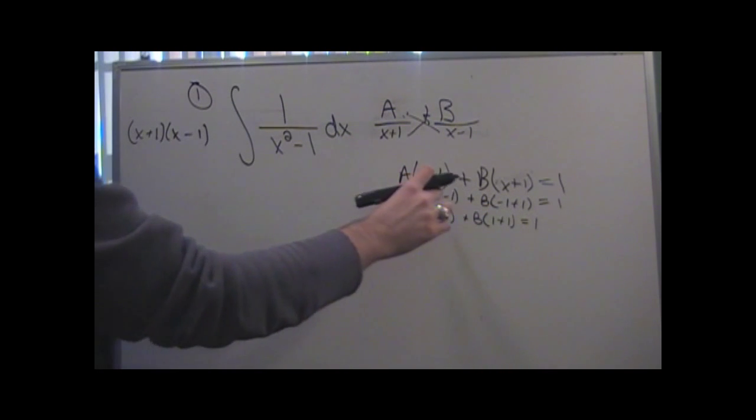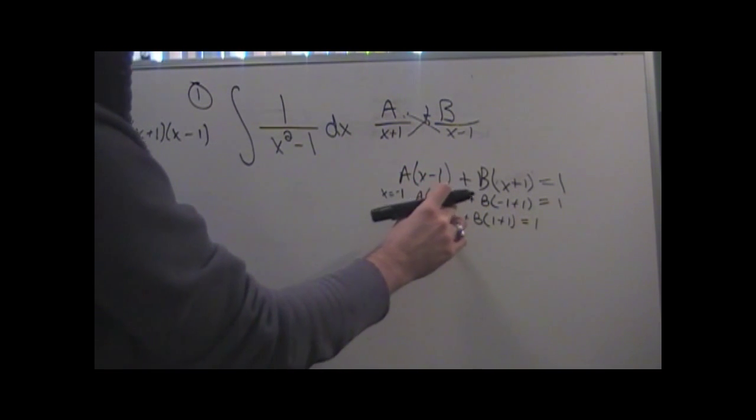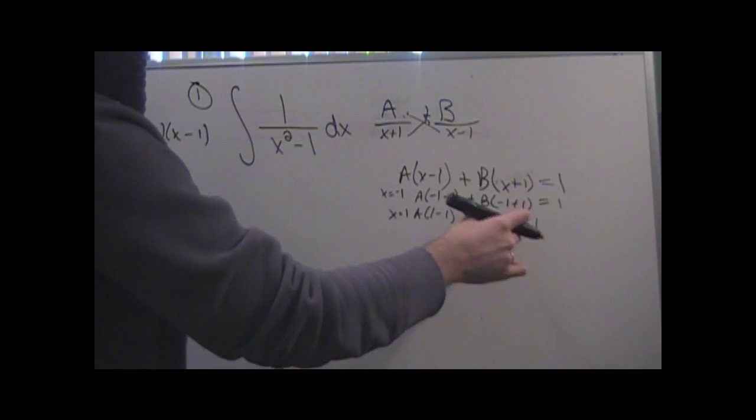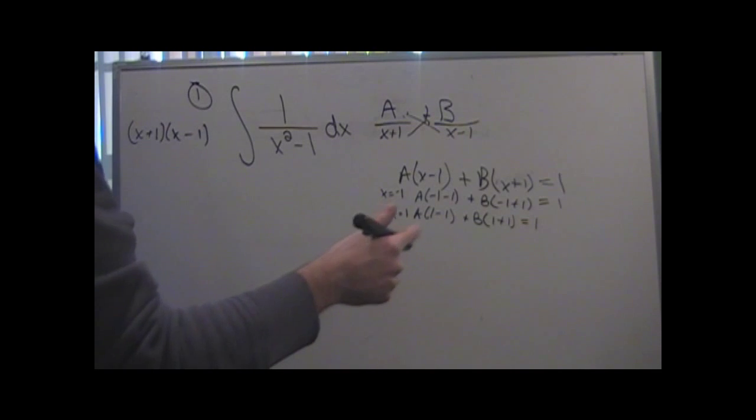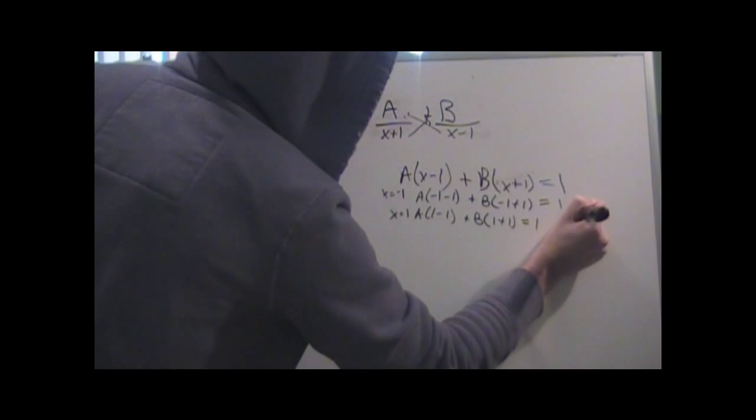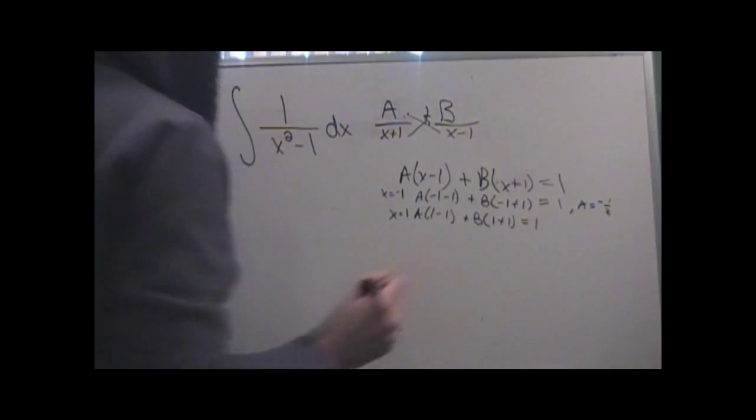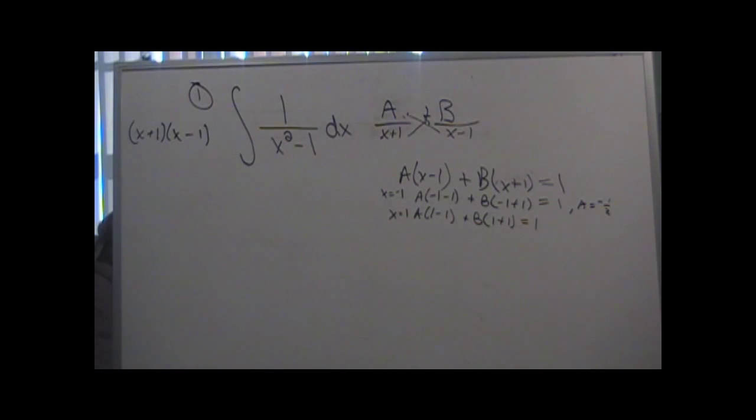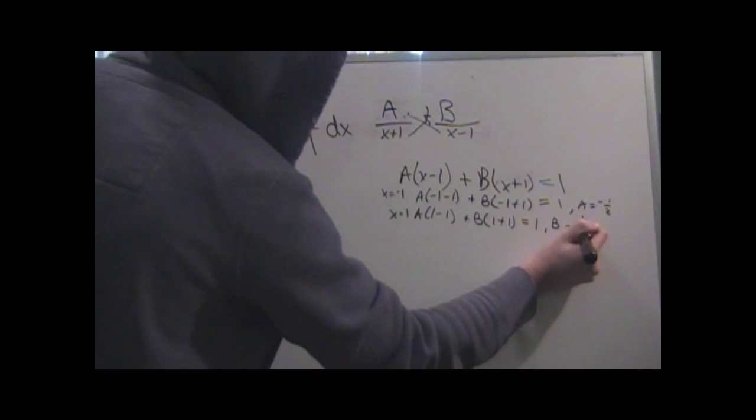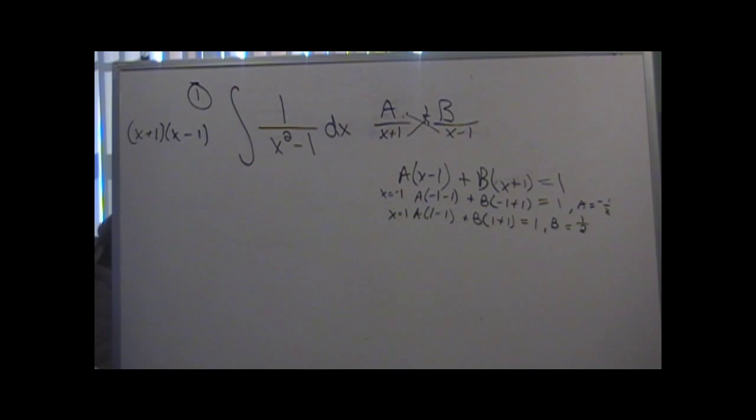So on the top line, you have negative 2 times A plus 0. So negative 2A is equal to 1. To get A, divide by negative 2, and A is equal to negative 1 half. So I come over here, A equals negative 1 half. And next, do the same thing for B. So B is equal to 1 half. So it's not safe to assume that you can get some number for A that it's going to be just a negative sign in front of it for B, as we'll see later.